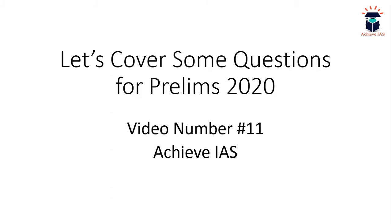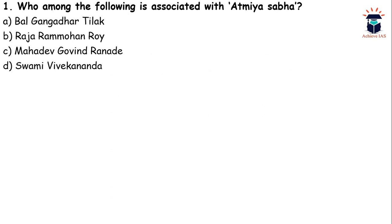The first question is: who among the following is associated with Atmiya Sabha? A) Bal Gangadhar Tilak, B) Raja Ram Mohan Roy, C) Mahadev Govind Ranade, D) Swami Vivekananda. The answer is B, that is Raja Ram Mohan Roy, who was associated with Atmiya Sabha.